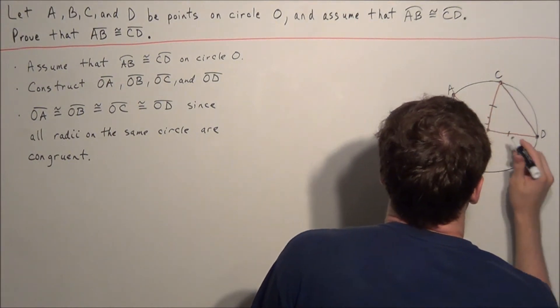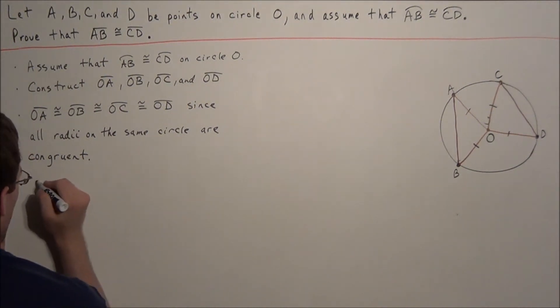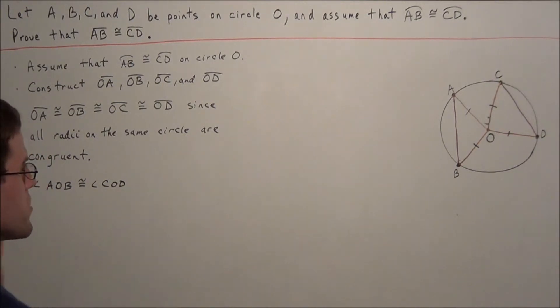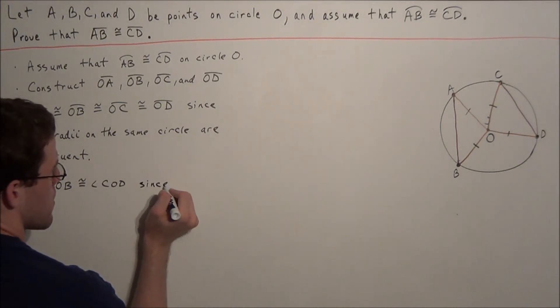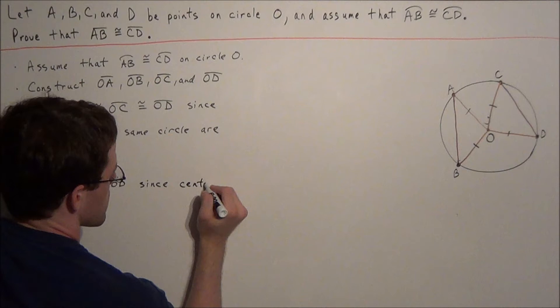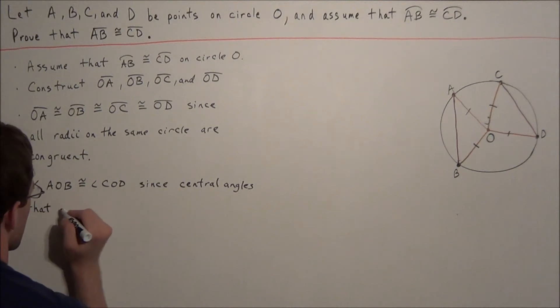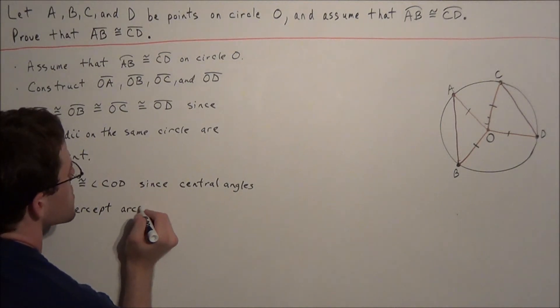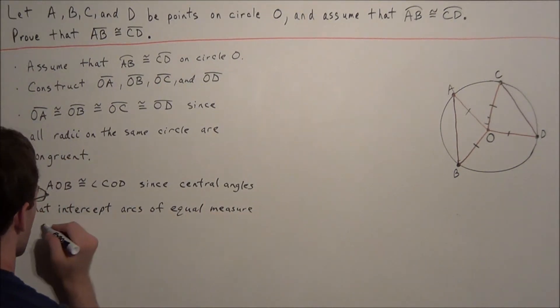So we'll just rewrite this here. This is circle O. So for the next line, what we want to say is we have angle AOB is congruent to angle COD. And now the reason for this, we could say that these two angles are congruent since central angles that intersect arcs of equal measure are congruent.